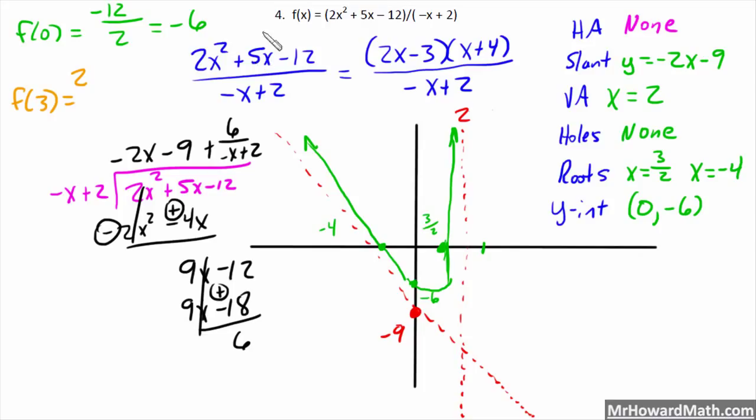So, that would be 2. I'm using the non-factored version. So, 2 input a 3 for x plus 5 times 3 minus 12. That's on top. So, over negative 3 plus 2 on bottom. I'm running out of room here. So, that would be 18. I'm coming down here with this. So, 3 squared is 9 times 2 is 18. Plus, 5 times 3 is 15. Subtract 12 from all of that. Over negative 3 plus 2 is negative 1.